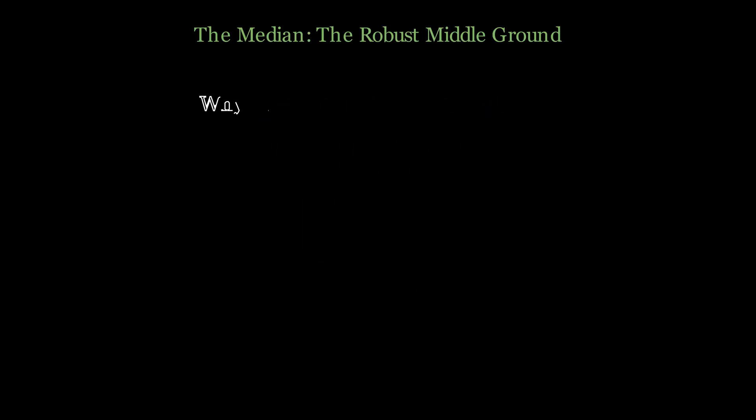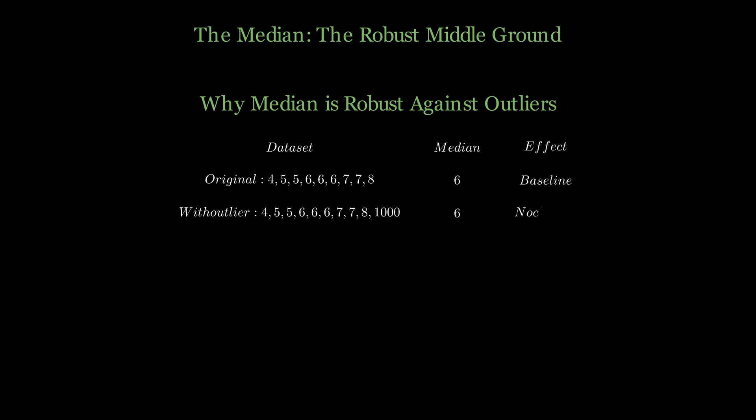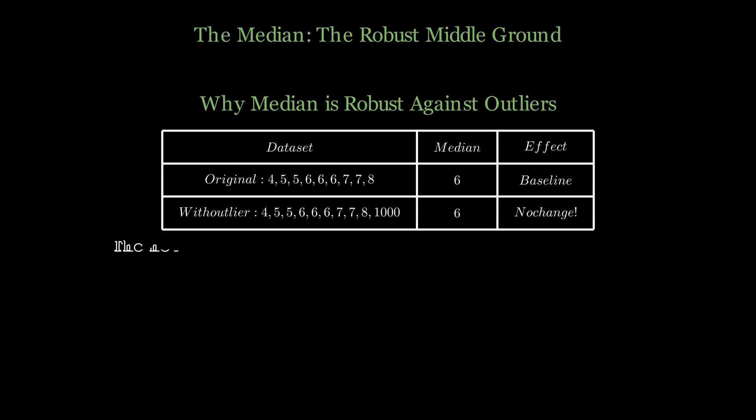Here's where the median's true power shines. Using the same data set where the mean was dramatically affected by outliers, watch what happens to the median. Our original median is 6. Even when we add an extreme outlier of 1000, the median remains 6, completely unchanged. This happens because the median only cares about position in the ordered list, not the actual values of the extremes. The outlier could be 100, 1000, or even a million, and the median would stay the same. This robustness makes the median invaluable for real-world data analysis.